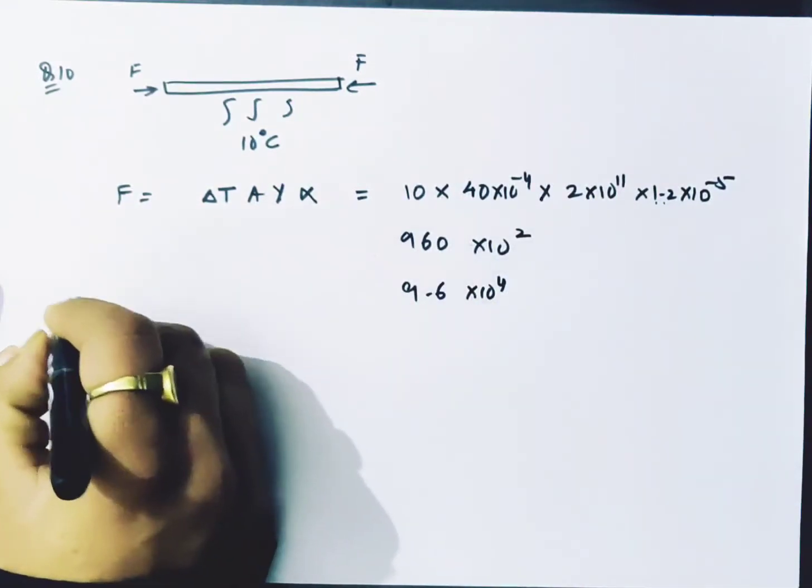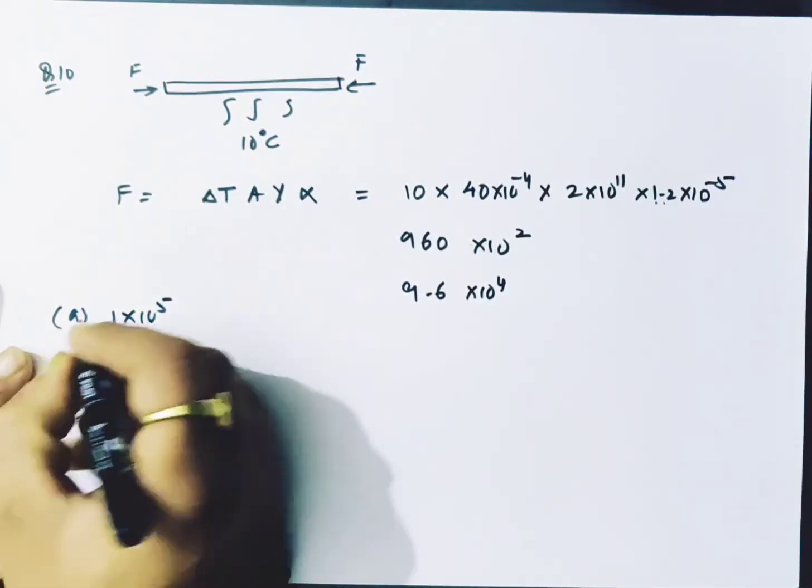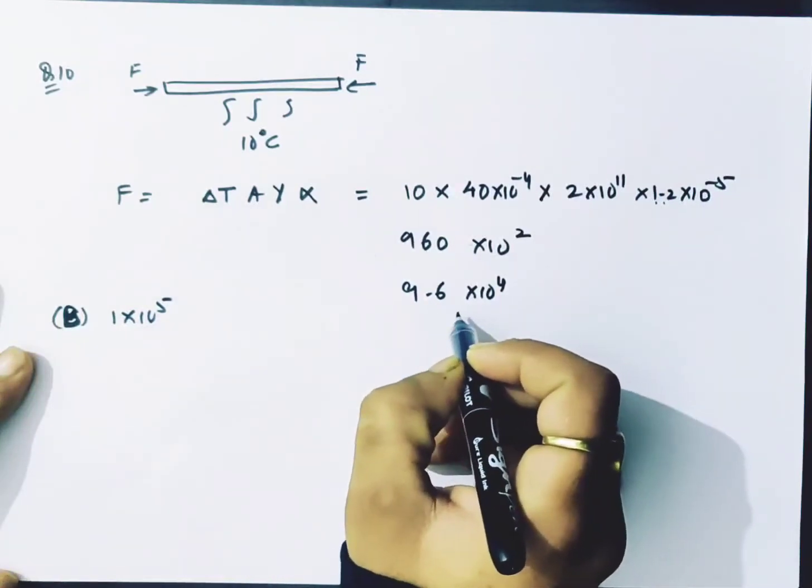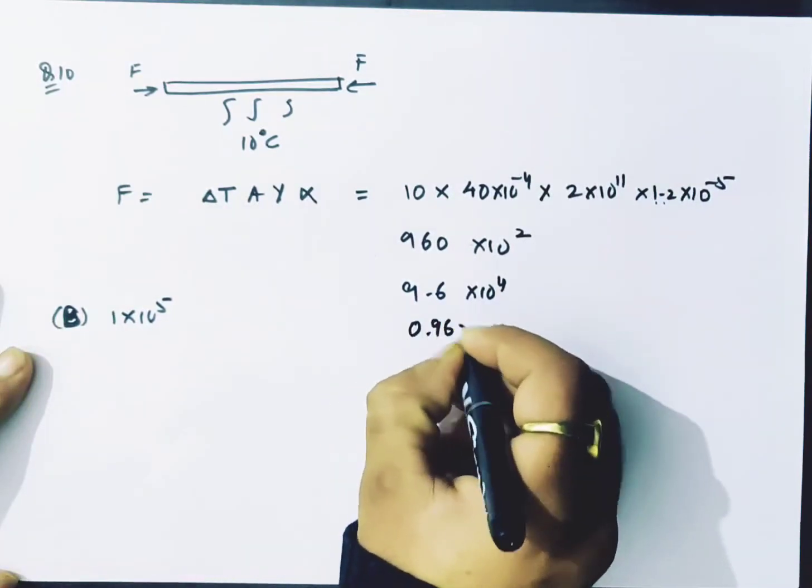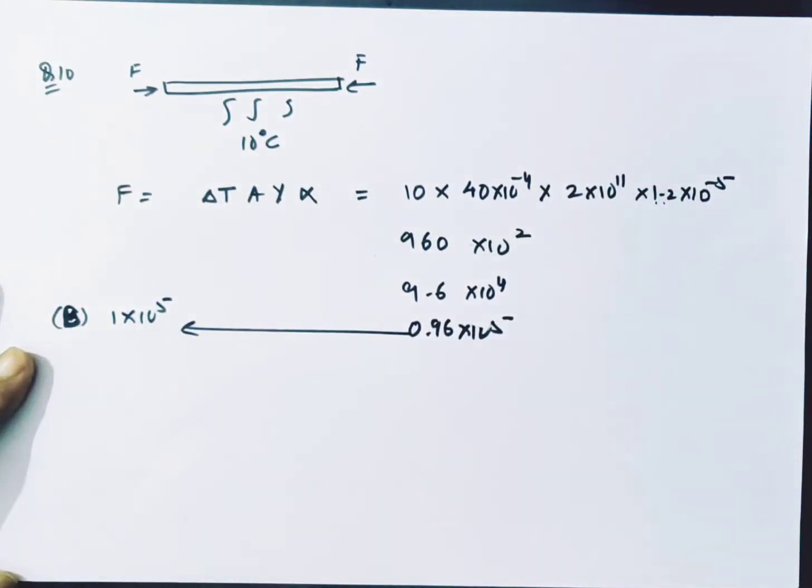Your option is not even there. The answer is 1×10⁵. The answer is B. So this was approximately correct. If we look at the answer, this is about 10⁵. So B is the correct answer.